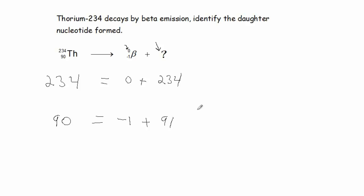So, the identity of our daughter nucleotide, look up our periodic table, and we find the atomic number of 91, because that's going to be our identity of our nucleotide. And 91 is associated with PA or protactinium.